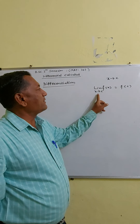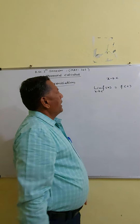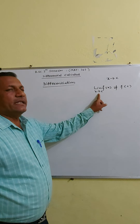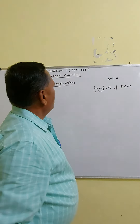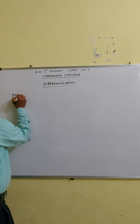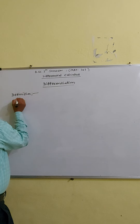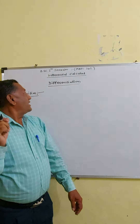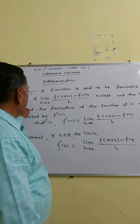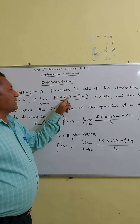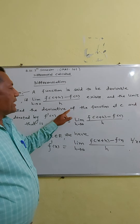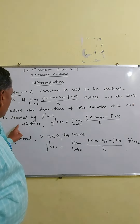If this condition is satisfied, then we say that F is continuous at point C. If F is not continuous, then the value of F(C) is not equal to the limit of F(x) as x tends to C. You already know this. Now, what is the definition of derivative of a function? A function is said to be derivable at point C if the limit of [F(C + h) − F(C)] / h as h tends to 0 exists. This limit is called the derivative of the function at C and is denoted by F′(C).